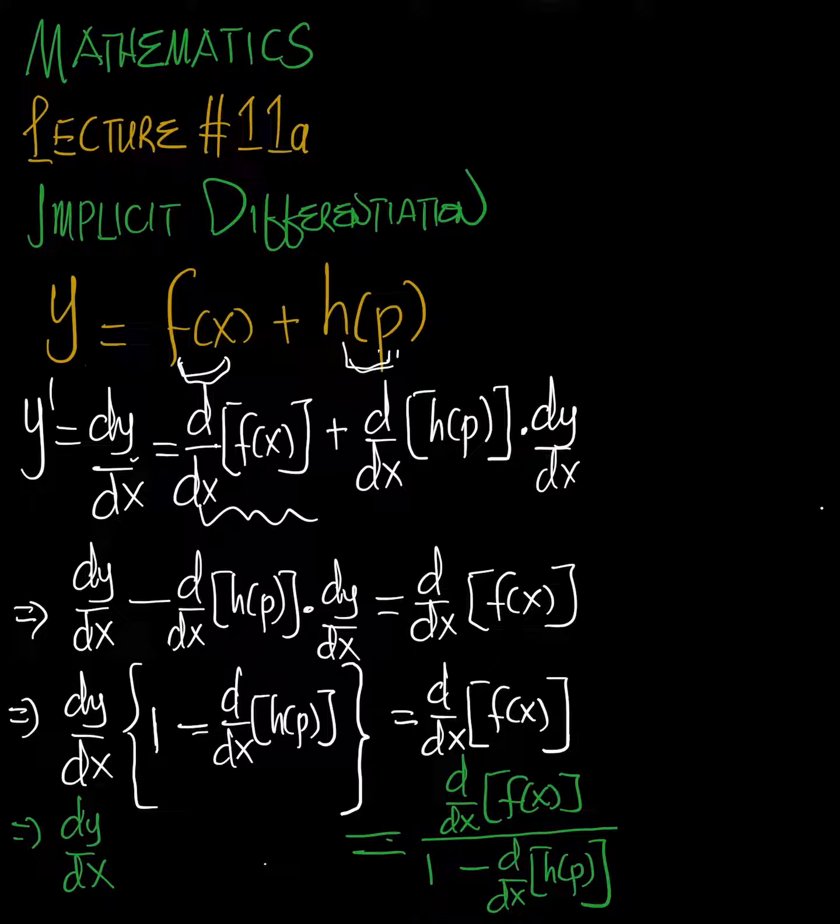plus the differential of h(p). We have to differentiate h(p), and when we do that, we also multiply by dy/dx. This solves the problem that it's not in terms of x.